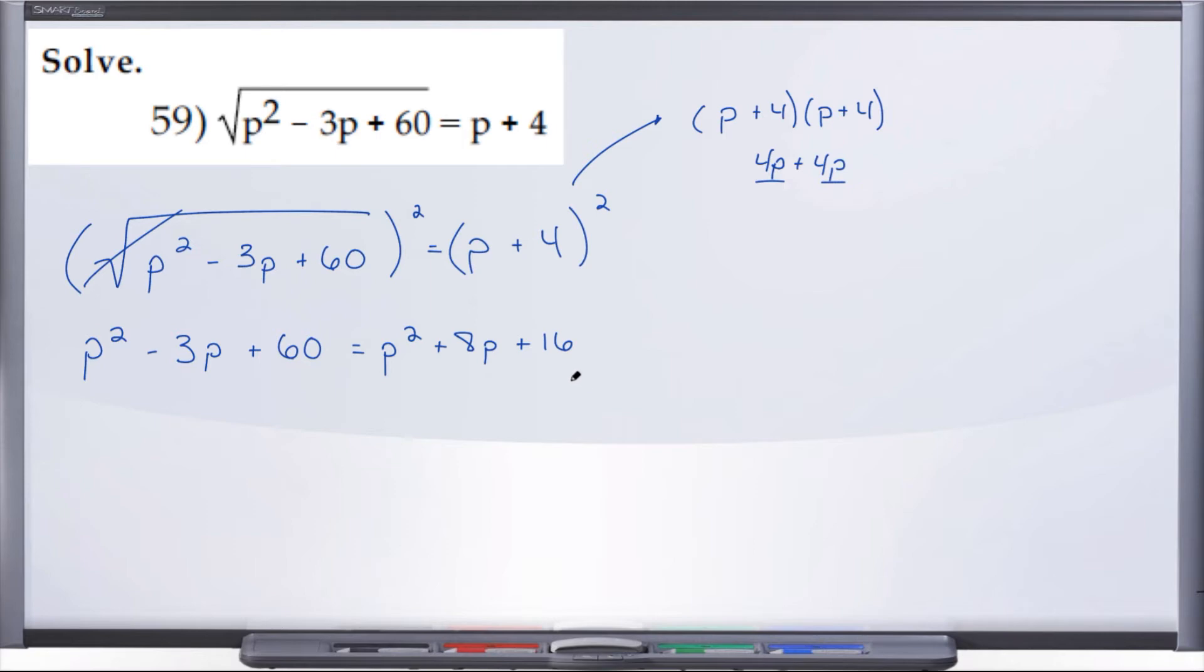So it looks like we have a quadratic equation, but when we subtract p squared from both sides, our p squared goes away and we're just left with negative 3p plus 60 equals 8p plus 16. So just a basic linear equation. Let's solve for p - we want to get p on one side and everything else on the other. So let's add 3p to both sides, which leaves us with 60 equals 11p plus 16.